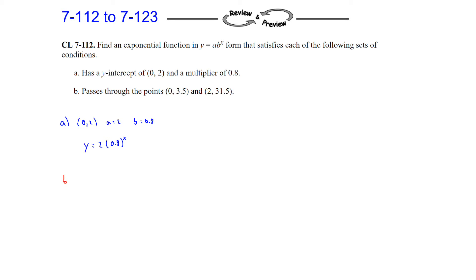Part B passes through two points. This one does give you the initial point, so we know the a value is 3.5. We are missing the b value, so we need to figure out what that is. We can use the ordered pair to find it, or we could set up a table.